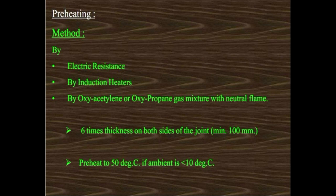Methods of preheating include electric resistance, induction heater, or oxyacetylene or oxy-propane gas mixture with neutral flame. The heating zone should be six times the thickness on both sides of the joint, minimum 100 mm. Preheat up to 50 degrees centigrade is required if the ambient temperature is more than 10 degrees centigrade.